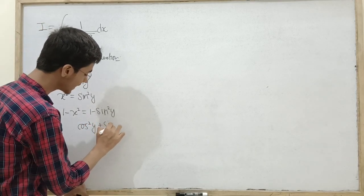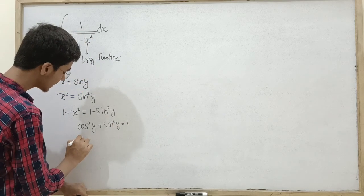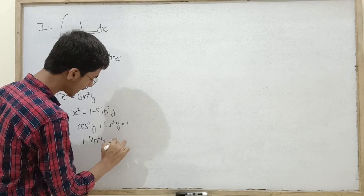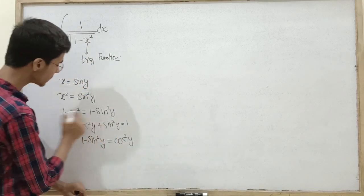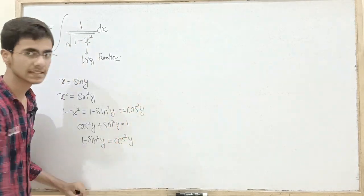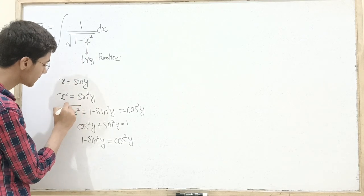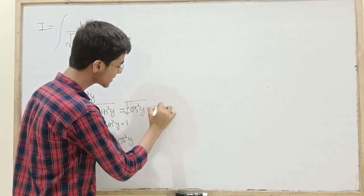Because everyone knows that cos square y plus sin square y should be equal to 1. That means 1 minus sin square y is equal to cos square y. So you know that 1 minus x square, you wrote cos square y. Now you know that root of 1 minus x square will be equal to root of cos square y, that is cos y.